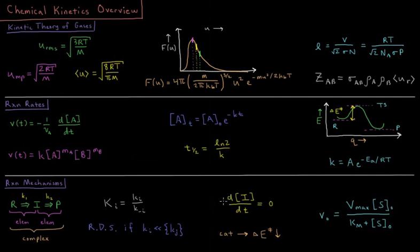We use the steady state approximation for complex rate expressions in order to help us derive the concentrations of intermediates by saying that the concentration of our intermediate does not change over time, its first derivative with respect to time is zero.